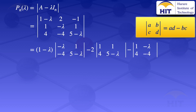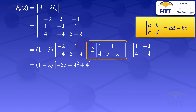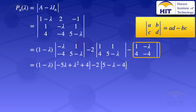To evaluate the determinant of the 2 by 2 matrix A, B, C, D, the result is AD minus BC. So for the first term, 1 minus lambda multiplied by the determinant of minus lambda, 1, 4, 5 minus lambda gives 1 minus lambda multiplied by minus 5 lambda plus lambda squared plus 4. For the next term, minus 2 times the determinant of 1, 1, 4, 5 minus lambda gives minus 2 times 5 minus lambda minus 4. For the last term, the determinant of 1 minus lambda, 4, minus 4 gives minus minus 4 plus 4 lambda.